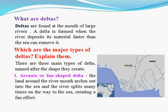What are deltas? Deltas are found at the mouth of large rivers. A delta is formed when the river deposits its material faster than the sea can remove it.